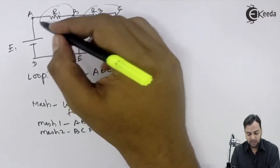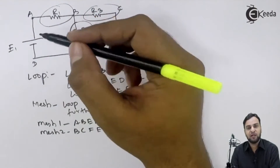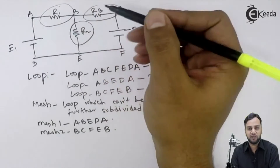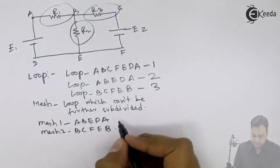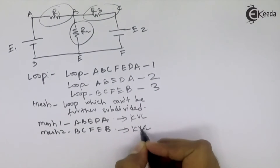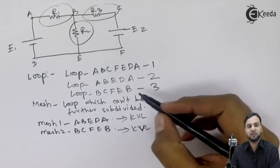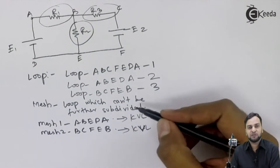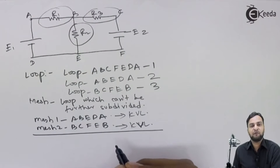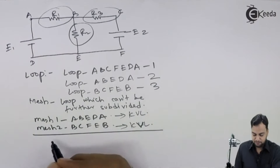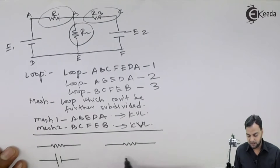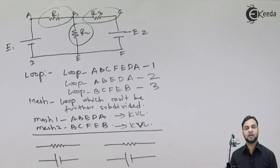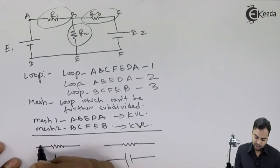Take care. We will see what techniques we use in mesh analysis. We use KVL. Out of the 2 techniques available to solve the circuit, we use KVL to simplify meshes. Before using KVL, we will go through the conventions that we follow to solve a KVL. These conventions are necessary so that we can apply a proper KVL law. Basically, we assume a mesh current.